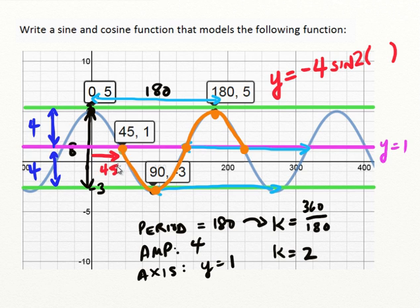Then I need the shift. The shift was 45. So this is going to be theta and it was to the right minus 45. And then finally, the axis at the end, plus 1. So that's the sine function.